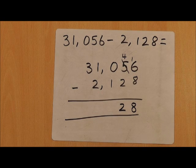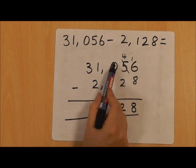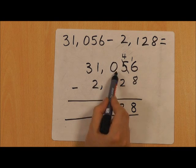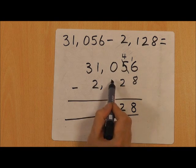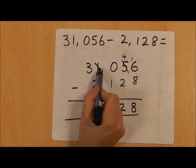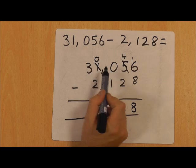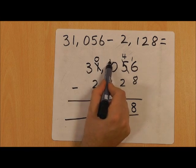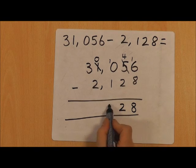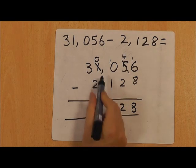In this column we need to do 0 subtract 1, but again because this number is smaller than the bottom number, we're going to have to go to the next place value column and exchange one. So we're getting rid of that and putting the 1 there, so we've now got 10 subtract 1, which gives us 9.